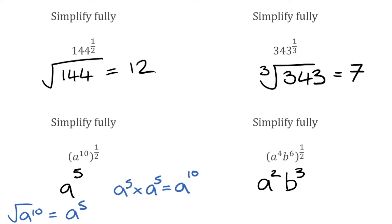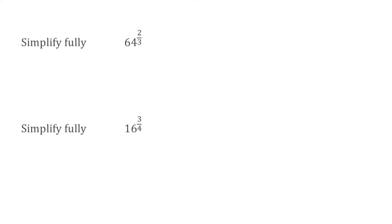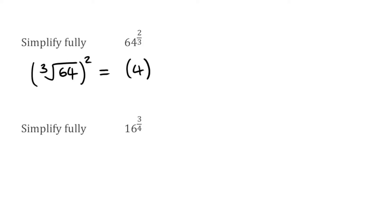Now we look at more difficult examples where the numerator isn't one. For 64 to the power of two thirds, we need to find the cube root of 64 and then square the result. The cube root of 64 is four, and four squared gives us 16, so 64 to the power of two thirds is 16.